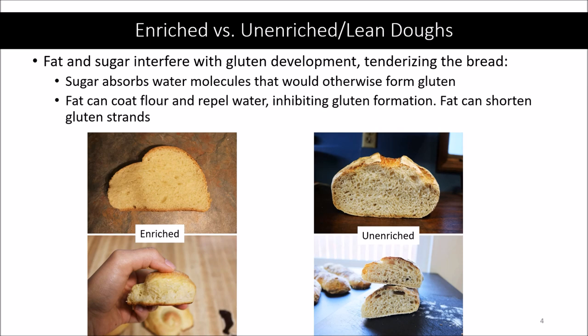The fats and sugars added to an enriched dough can actually interfere with gluten development and help to tenderize the bread. Sugar can interfere with gluten development because sugar attracts water — it is hydrophilic — so it competes with gluten for water. If you add sugar to the dough it will attract some of the water that could otherwise be used to help bind the glutenin and gliadin into gluten.